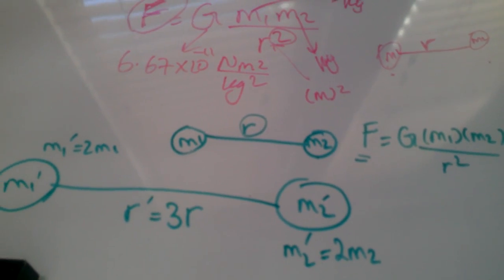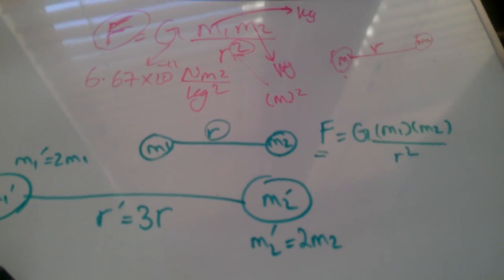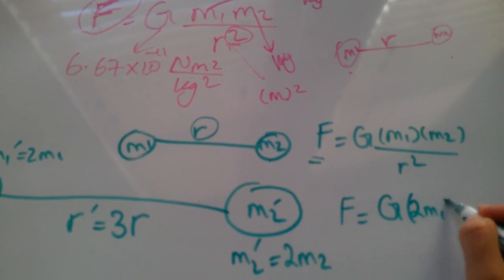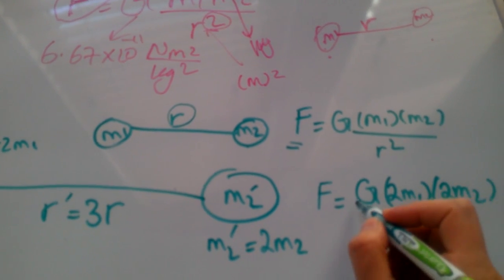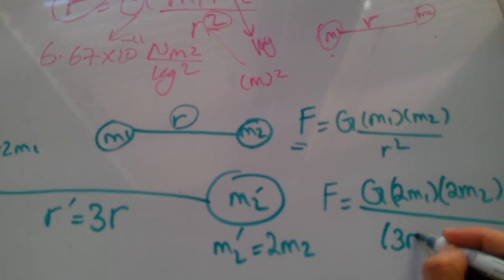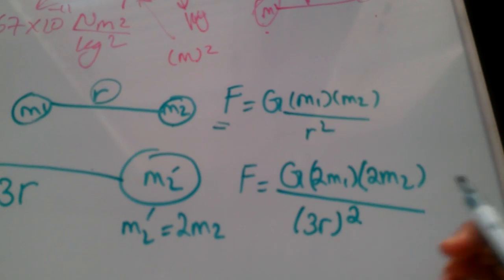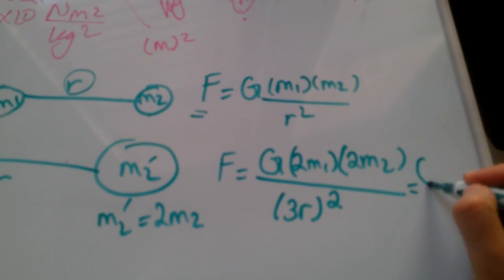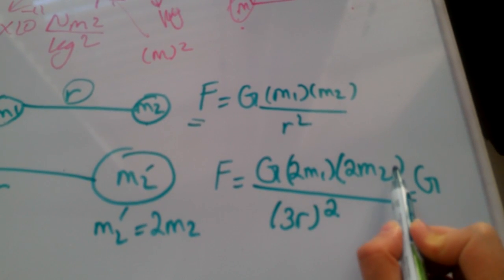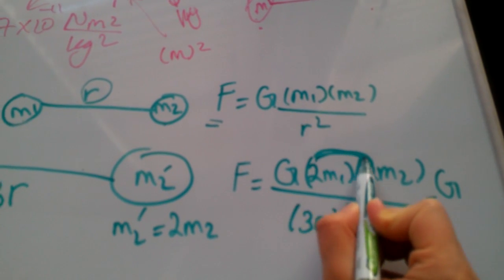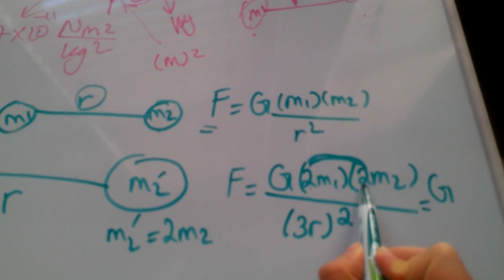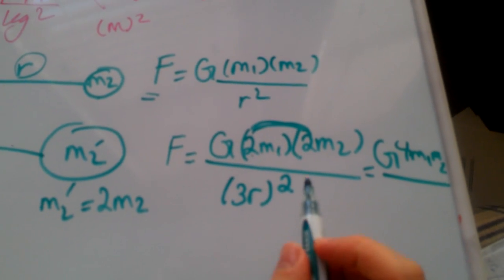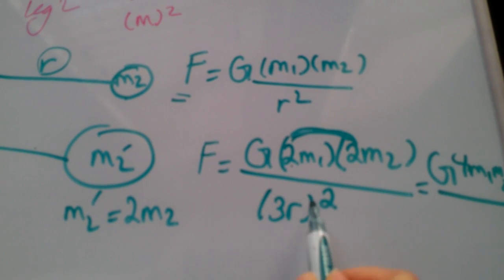So now the gravitational force, where this one reads F equals G, that constant, times double the mass of one, double the mass of second one, over triple the distance squared. We've got to be careful because the denominator is squared, so you need to be a little bit more careful on this.